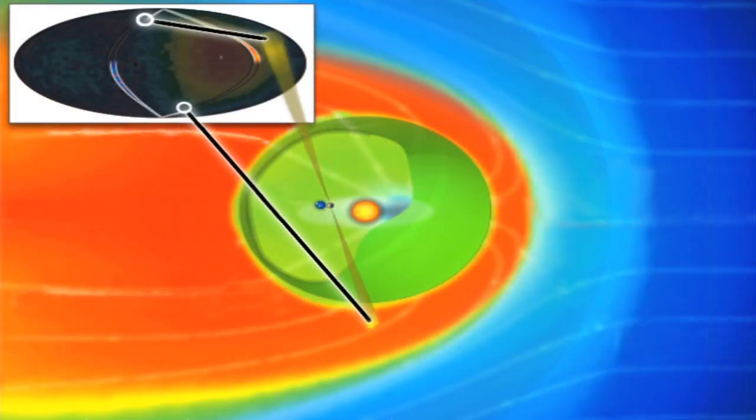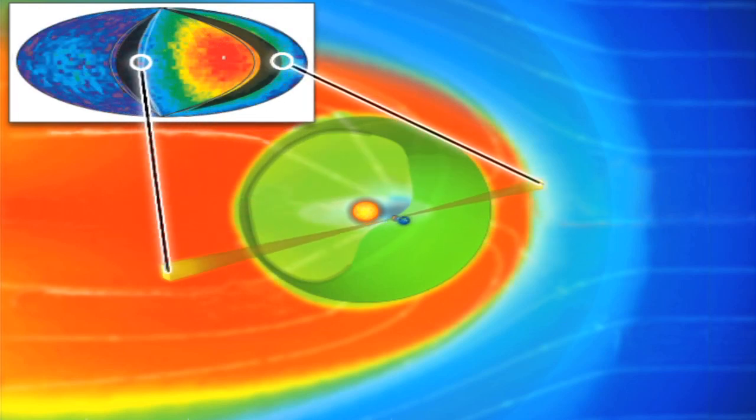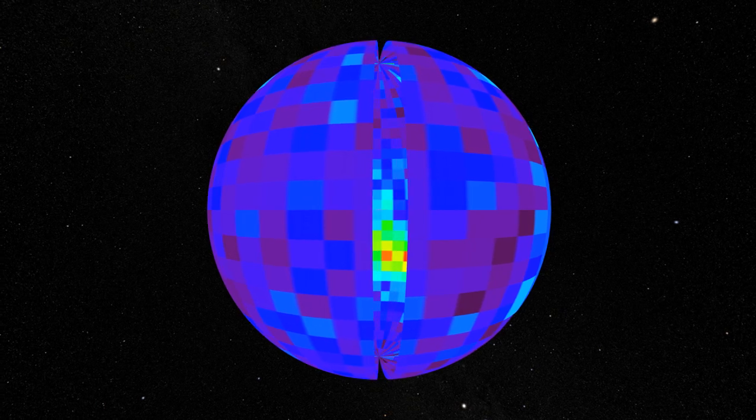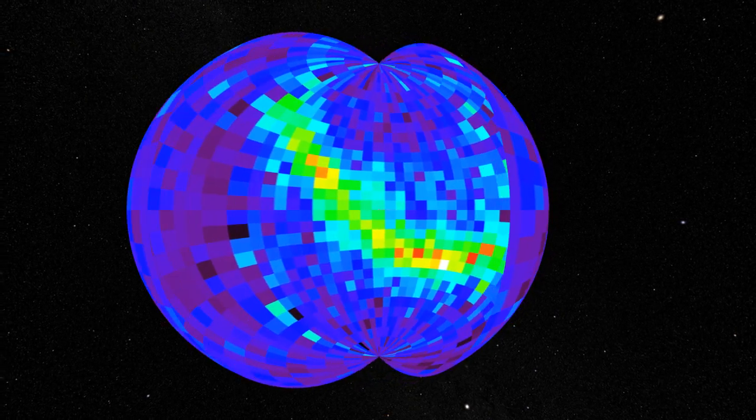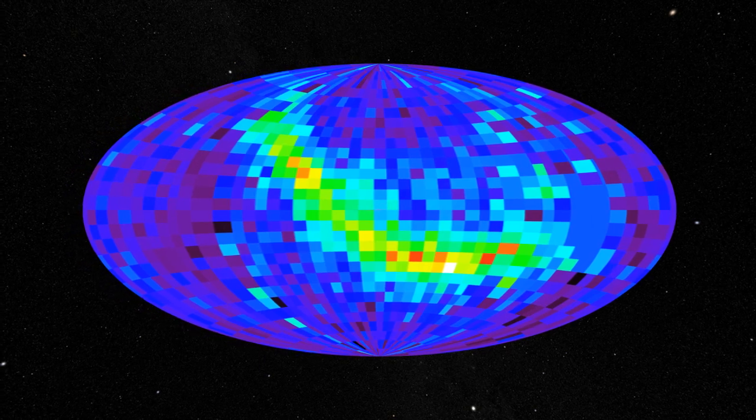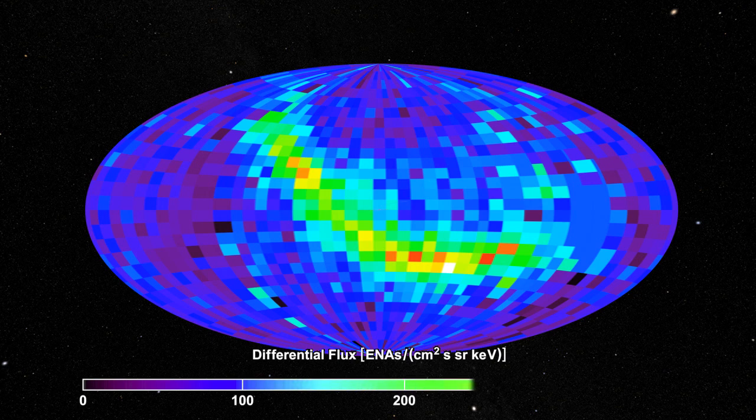Over the course of six months and many orbits, IBEX can paint a picture of the entire sky in ENAs. For easier viewing, the sphere of the sky is unwrapped and projected onto an oval, much like how a map of the spherical Earth is projected onto a rectangle. The colors correspond to how many atoms hit the detector from a particular region. Violet represents few atoms, and the colors move up to red, which represents many atoms.